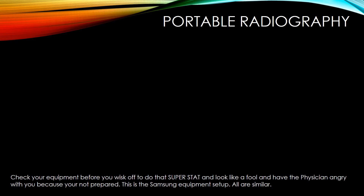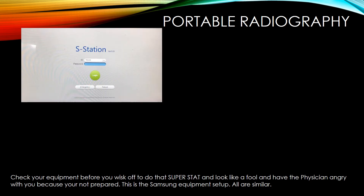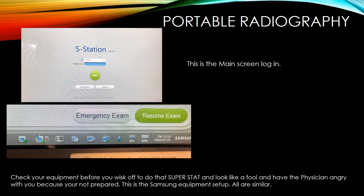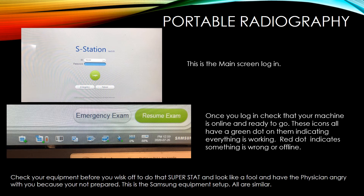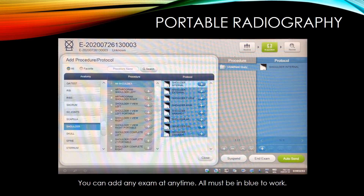Check your equipment before you rush away to do a stat exam. This is the Samsung equipment setup. This is the main screen page login. Once you log in, check that your machine is online and ready to go. Icons with a green dot indicate all is working; a red dot indicates something is wrong or offline — you may need to reset, reboot, or turn your IR cassette back on. You may add any exam at any time. For this machine, everything must be in blue to work. For example, to add a shoulder, you add shoulder in blue, then go to procedure, add all shoulder, then under protocol add each specific view you would like.